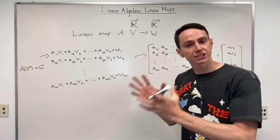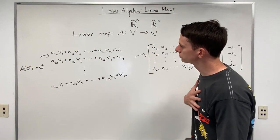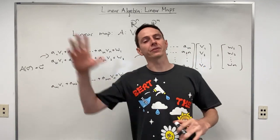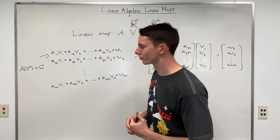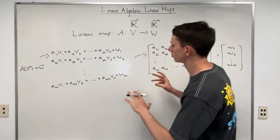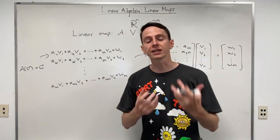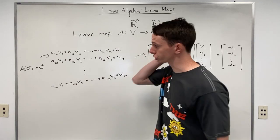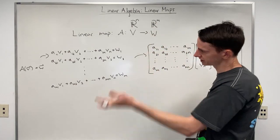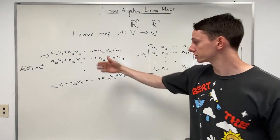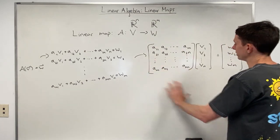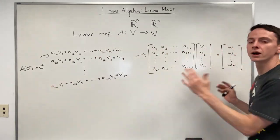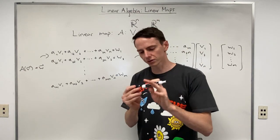Before we get into specifics, I want to quickly remind ourselves of Einstein's summation notation. This was notation introduced at the end of the last section when we were talking about vectors. A lot of times when working with matrix properties, using Einstein's summation notation is very convenient. To start, I want to show how this notation carries over into matrices — not just vectors — by writing out this matrix-vector equation using Einstein's summation notation.